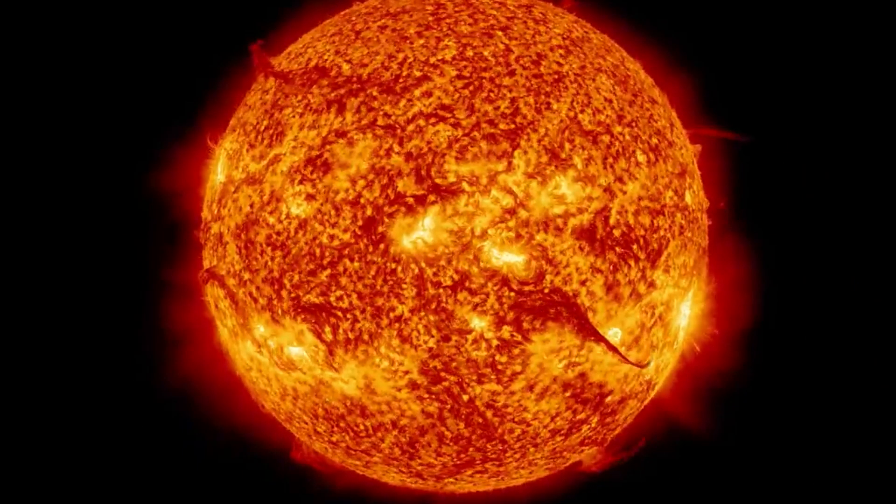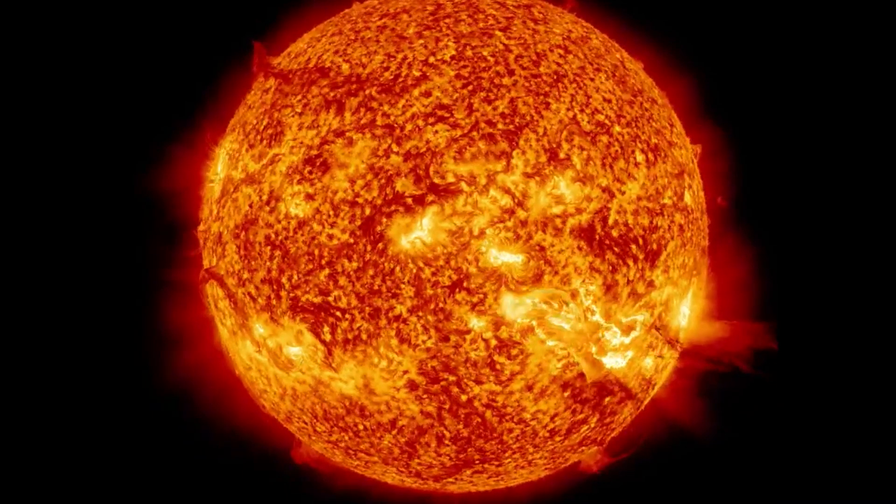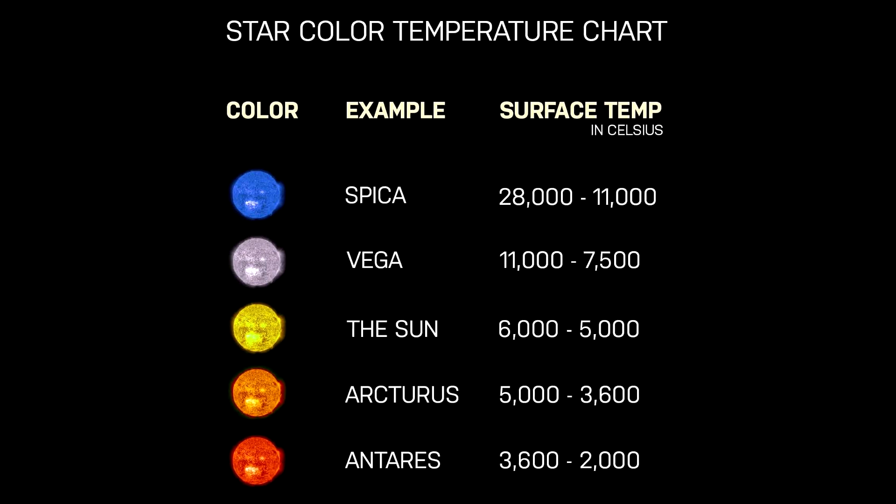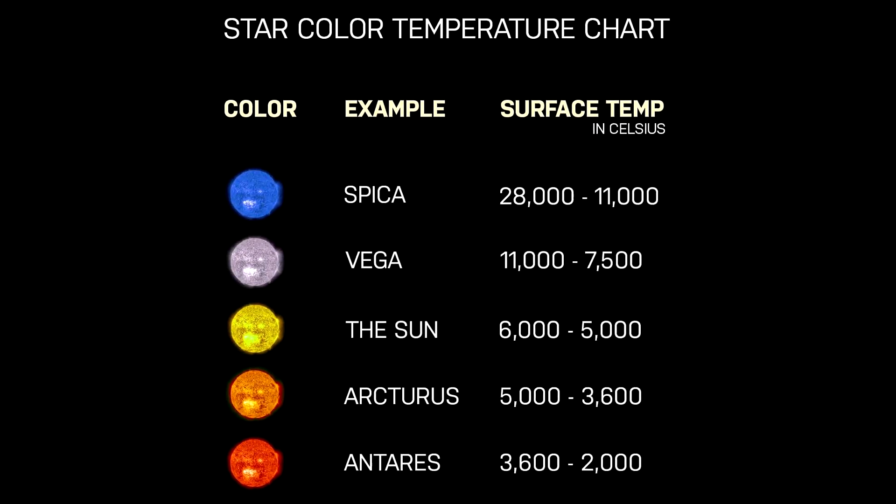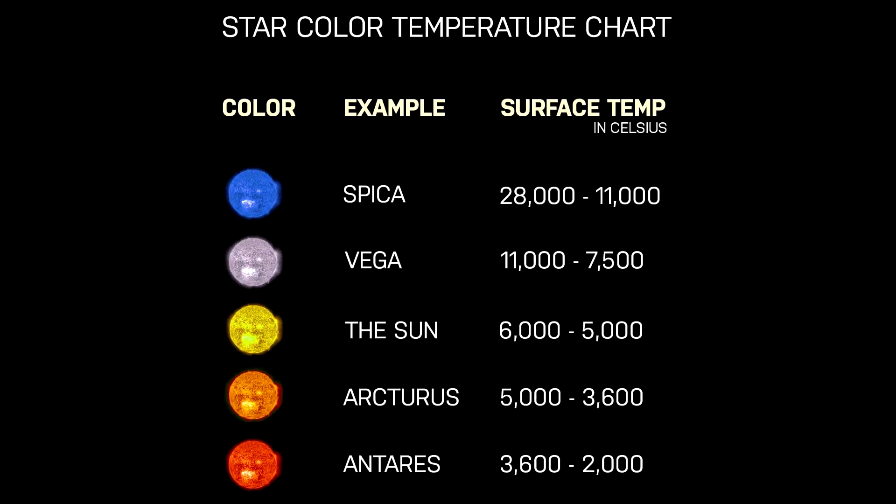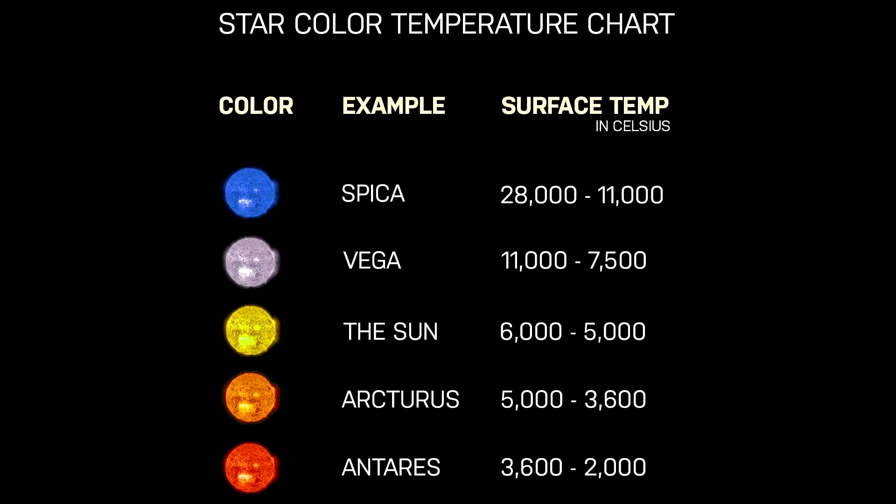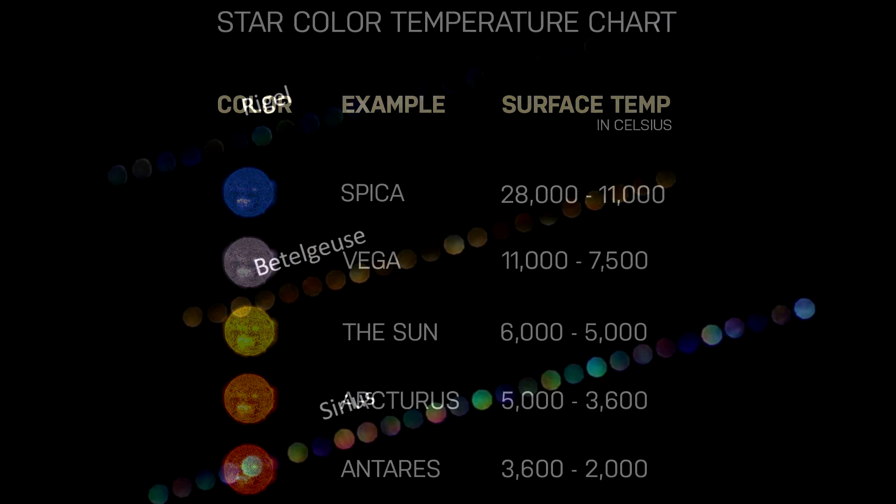Our sun emits more yellow light than any other because its surface temperature is 5,500 degrees Kelvin. If the sun's surface were colder, say 3,000 degrees, it would look reddish, like the star Betelgeuse. If the sun were hotter, around 12,000 degrees, it would look blue, like the star Rigel.